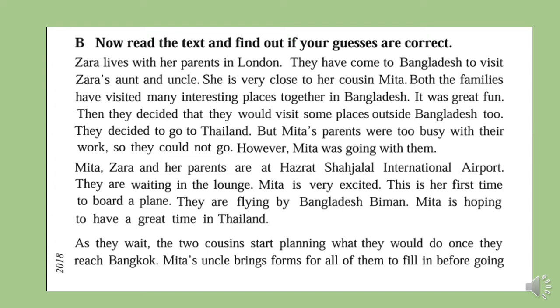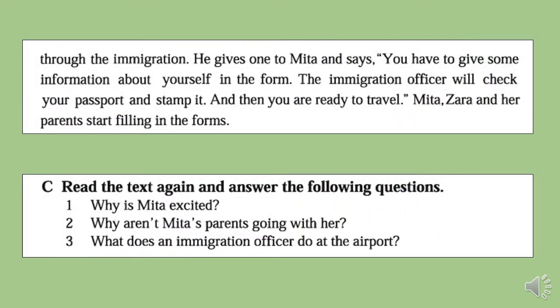Mita's uncle brings forms for all of them to fill in before going through the immigration. He gives one to Mita and says, 'You have to give some information about yourself in the form. The immigration officer will check your passport and stamp it, and then you are ready to travel.' Mita, Zara, and her parents start filling in the forms.